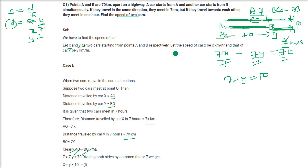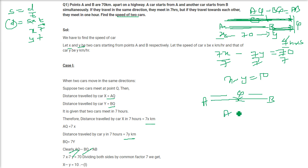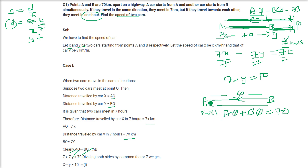Now for the second condition — if they travel towards each other. Again A and B are the two points. This car travels one way and this car travels the other way, so they meet at point Q when travelling towards each other. AQ plus BQ equals A-B which is 70. The speed is X and the time given is 1 hour, so the distance from A is X into 1. Distance from B is Y into 1.